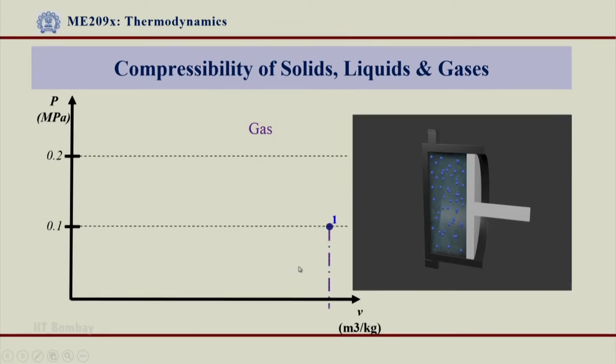So, this is my 0.1 from where I start the compression. I will compress this gas as I said from 0.1 to 0.2 or 0.1 MPa to 0.2 MPa. Now, if I compress the gas from 0.1 to 0.2 and if I say that the temperature during this compression remains the same, that is isothermal process, then let us see what happens.